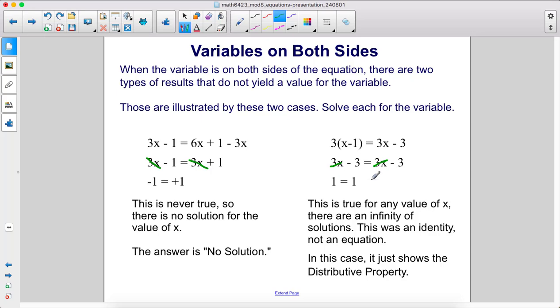So there's infinitely many solutions. This was an identity, not an equation. In this case, it just shows the distributive property.